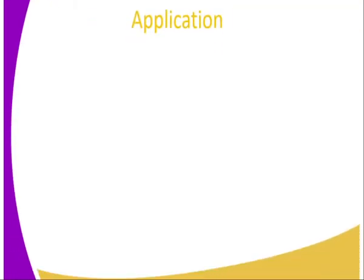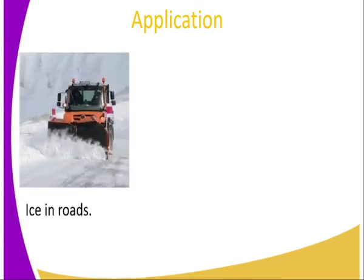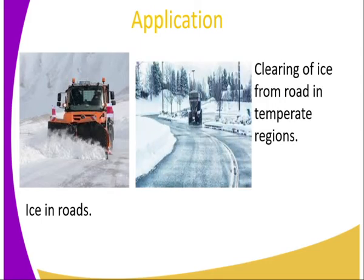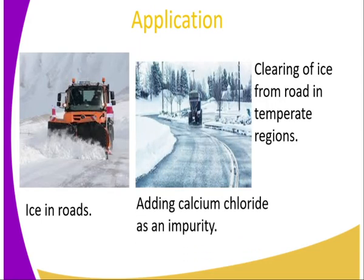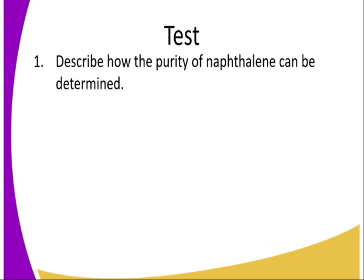One real-world application is in temperate regions where ice falls on roads. Mechanically removing ice may be very expensive and uneconomical, so calcium chloride is applied as an impurity. It lowers the melting point of ice, helping to clear ice from roads in temperate regions. As a result, water melts at a temperature below zero degrees Celsius, clearing the path.